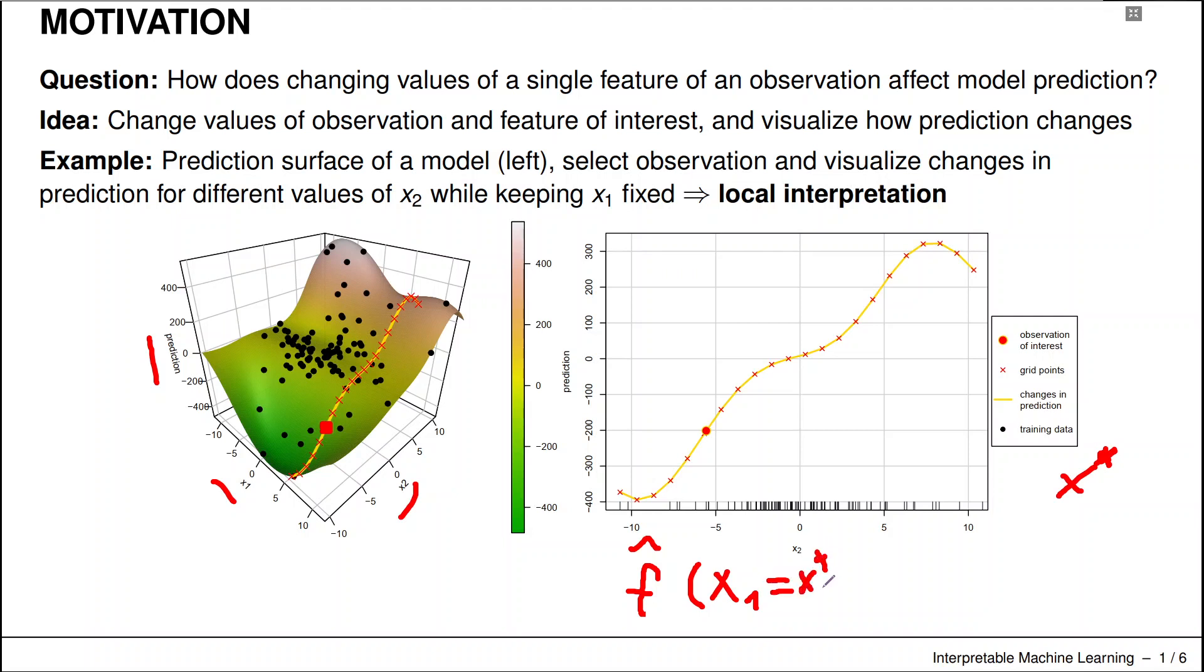This would be x₁*, and then we would plot the function only as a variable function in x₂. If there were for example a feature x₃, which we don't have here, we would also set x₃ to the observed value of that feature in x*.